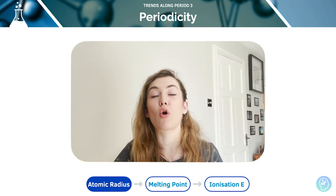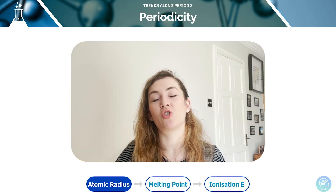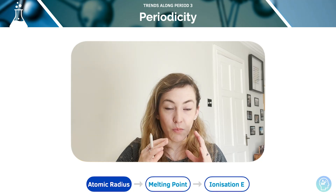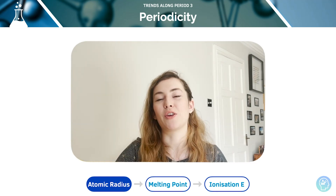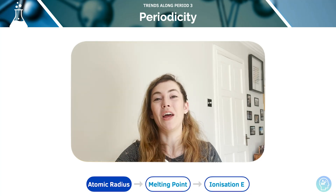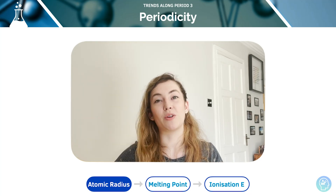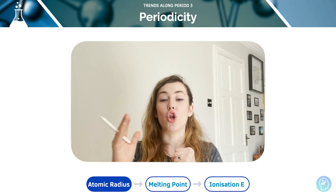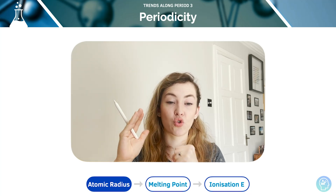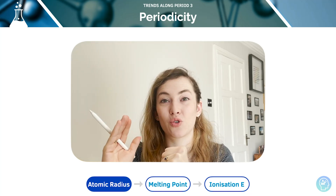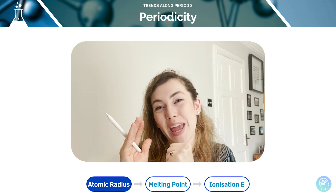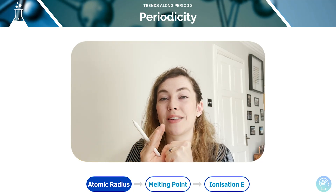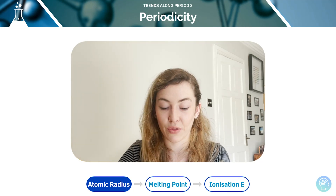As we move across the period, the proton number is increasing, so the positive charge in the dense centre of that atom is going to be increasing, and the shielding is not going to change because we're in the same period. As we said in the previous tutorial, we have no increase or decrease in shielding. We're going to be putting our electrons into the same shell. So we're going to get a stronger positive charge, no increase in shielding, and therefore the attraction between the nucleus and the outermost electrons is going to increase and the electrons are going to be pulled inwards towards that increasing positive charge.